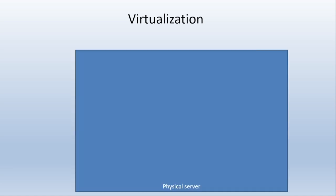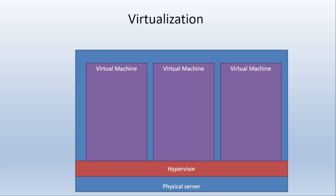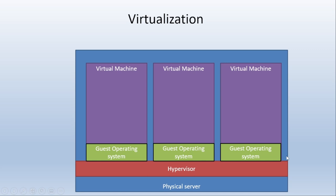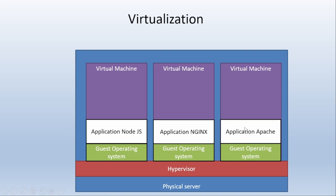First we mount the physical server in the data center, then we install a hypervisor — here we use VMware's ESXi or Red Hat KVM. After that we create virtual machines. We created three VMs, installed the guest operating system on all three, and due to library file limitations we install one application per VM — running applications like node.js, nginx, and Apache web server. These are just examples; we can install any application.